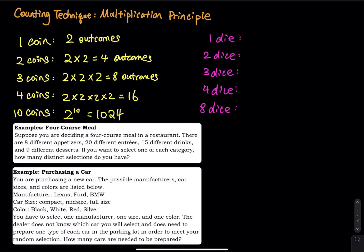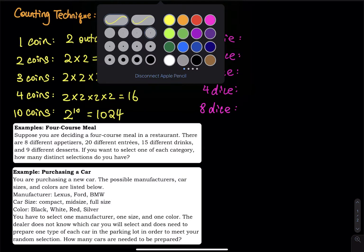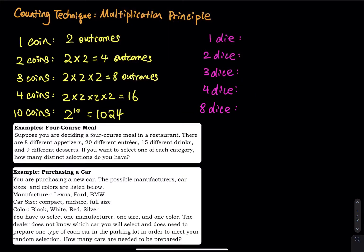How about the dice problem? If we roll one die, one die has six faces, so the total is six outcomes. And then two dice: the first die has six faces, the second die has six faces, so six by six is 36 outcomes.